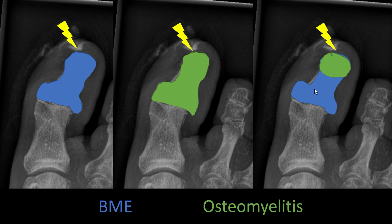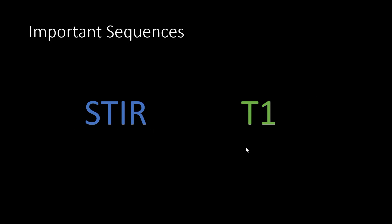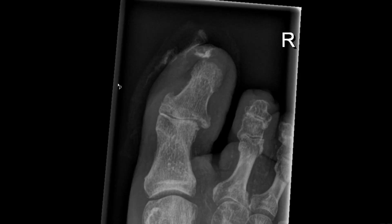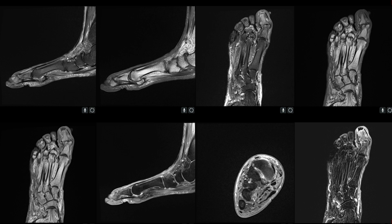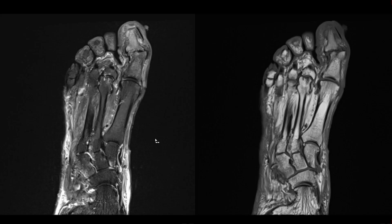Now, how can we differentiate osteomyelitis from reactive bone marrow edema? For this we just need two sequences: the STIR sequence and the T1-weighted sequence without gadolinium. Here is the first patient, an older one. Here is the ulcer and we don't really see any clear signs of osteomyelitis on the conventional radiograph. There are a lot of sequences but the key ones are the STIR and the T1, then the same two sequences in another orientation. Let's start off with the two important sequences.